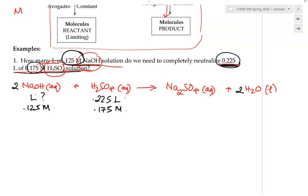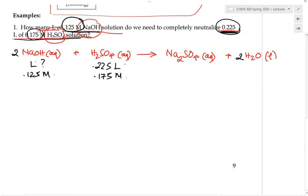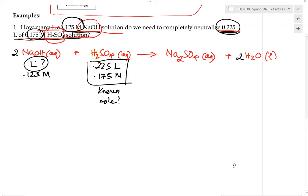Let's go over how to solve this problem. We have the known solution — we know both the volume and concentration of the sulfuric acid solution. We are asking how much volume of sodium hydroxide we need. The solution map is: start with the volume of the known reactant. Since we know the volume and molarity of the sulfuric acid solution, we can figure out the moles of sulfuric acid. Then use the mole-to-mole ratio to convert to moles of sodium hydroxide. Finally, using the molarity of sodium hydroxide, convert moles to volume.